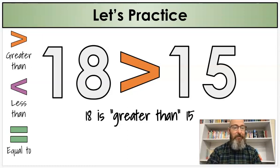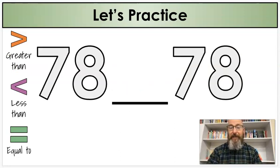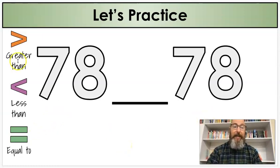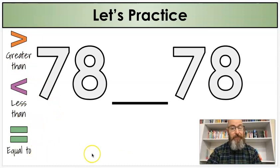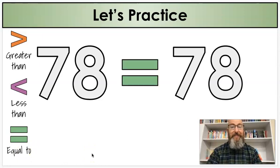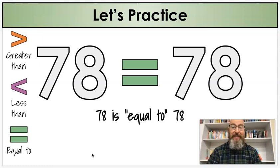I have two numbers: seventy-eight and seventy-eight. Is seventy-eight greater than, less than, or equal to? They're the same number, so it's going to be equal to. My sentence: seventy-eight is equal to seventy-eight.